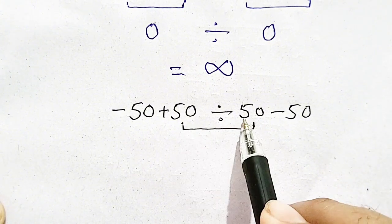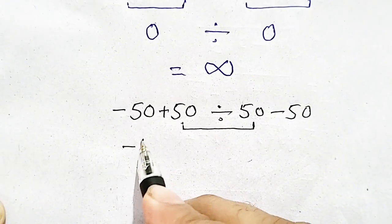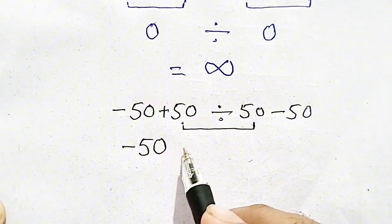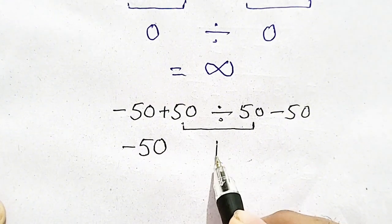So, 50 divided by 50 will be equal to 1. Minus 50 will be written as it is.